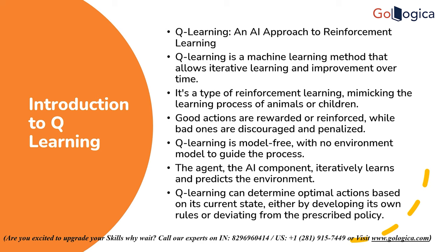Q-Learning approaches reinforcement learning in an off-policy manner as well. Finding the best course of action given the current situation is the goal of Q-Learning techniques. The Q-Learning method can achieve this by either breaking from the established policy or creating its own set of rules. A specified policy is not required because Q-Learning might depart from the provided guidelines.